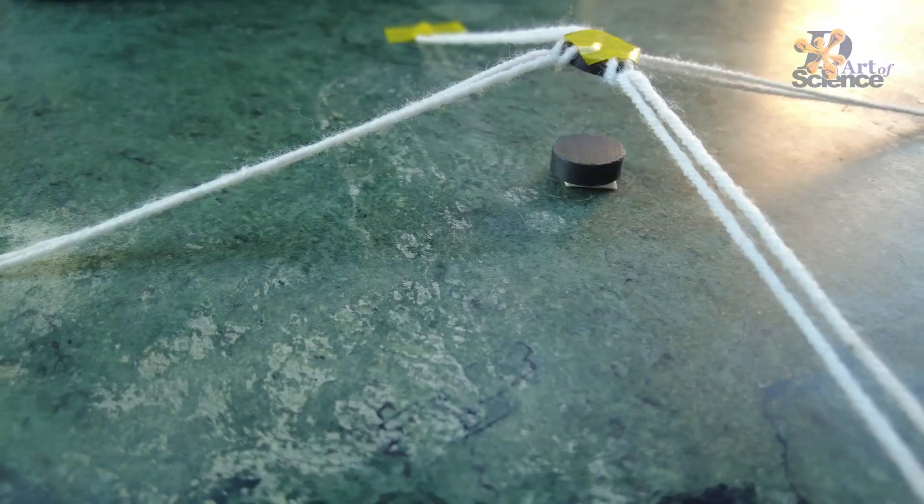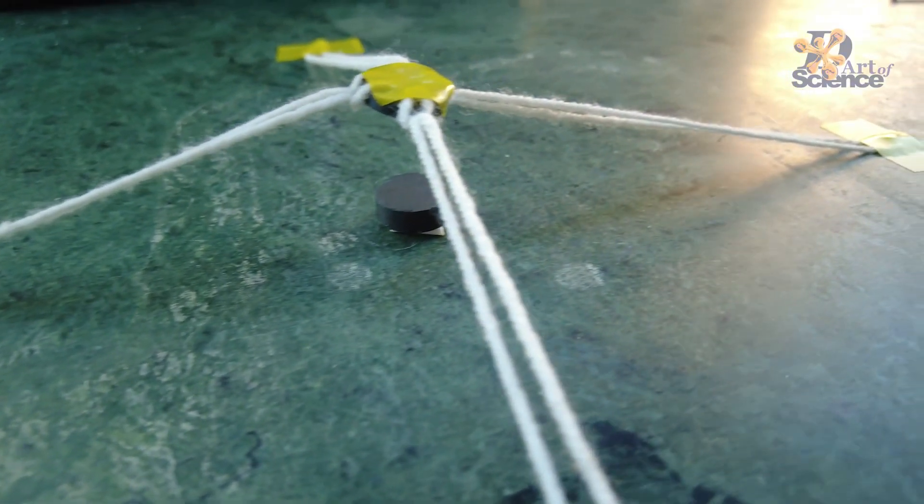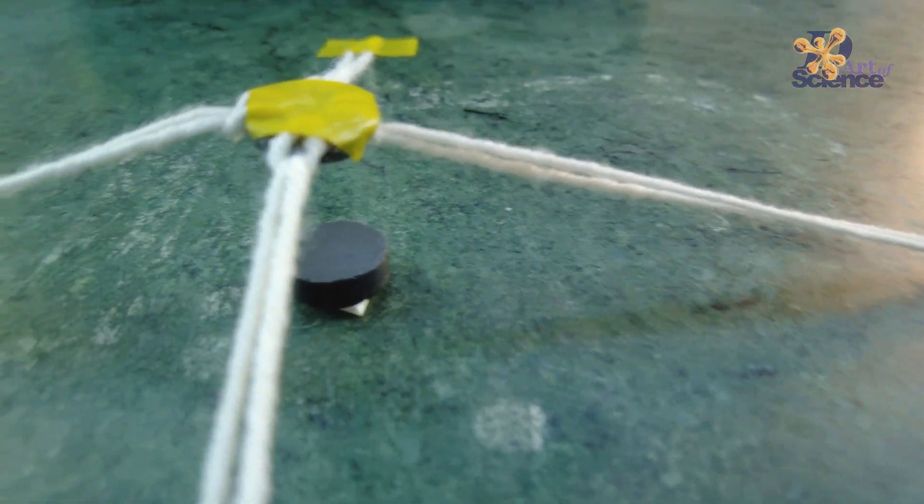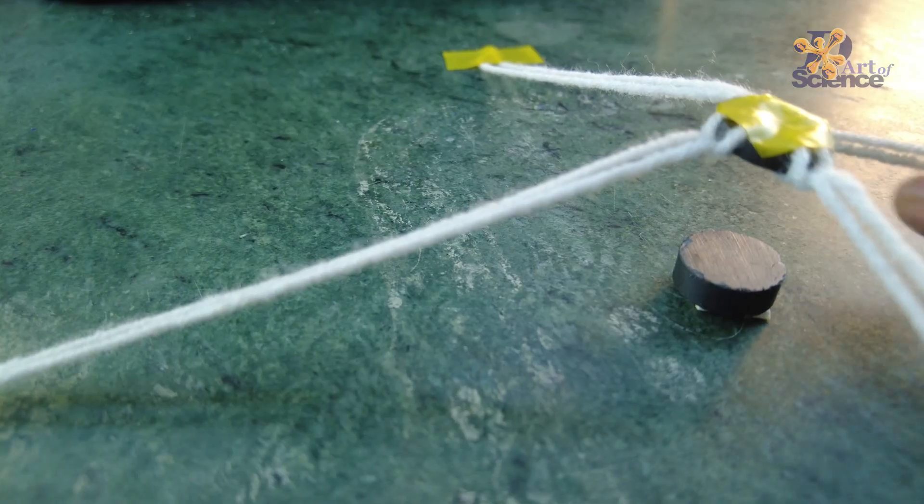If you get it right on your first time, you will realize that the magnet on top starts floating because it repels the magnet below.